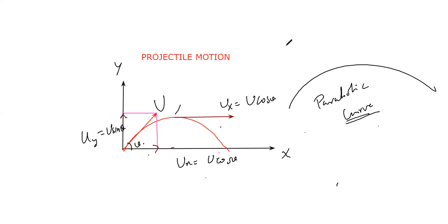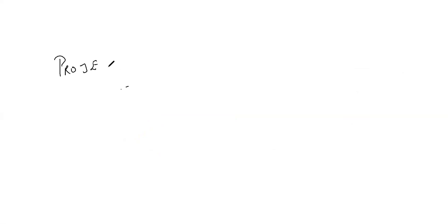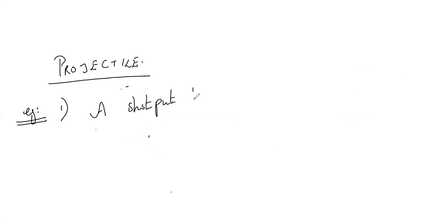First I will tell you what a projectile is, then explain the diagram. I will give some examples from real life. First one: a shot put thrown by an athlete. The athlete has a shot put in his hand and he will try to throw it to the maximum distance, and it will follow a parabolic curve.